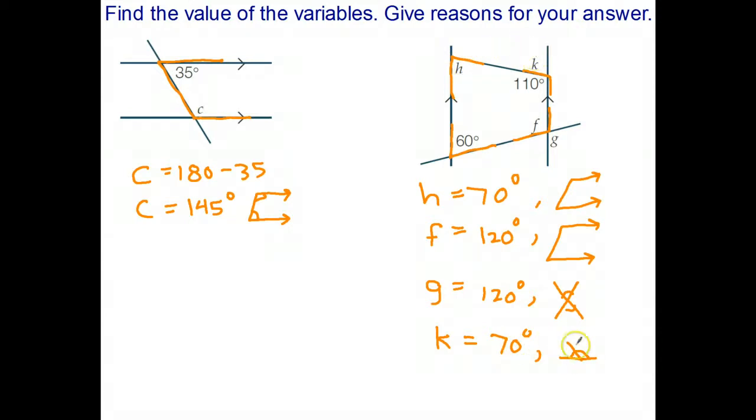So once we knew that H was 70, we knew that K was 70. So the alternative could have been you could have also used the Z rule. Often with these more complicated questions there is more than one way to find one of the unknown angles.